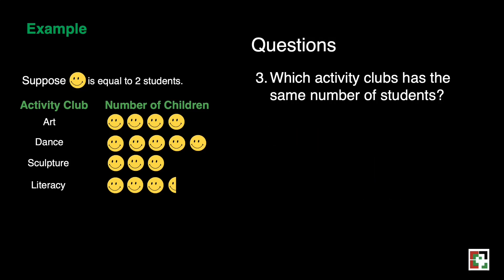For question three, which activity clubs have the same number of students? Based on the table, none of these clubs have the same number of students, since art has eight students, dance has ten students, sculpture has six students, and the literacy club has seven students. So my answer here is none.